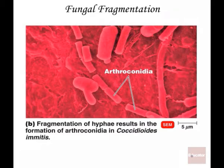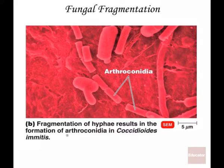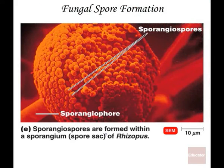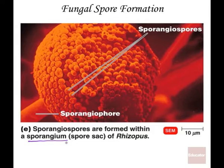Here is an example of fungal fragmentation. The hyphae has formed another one through fragmentation — it basically grows a hyphae and then breaks it off. Fungi can also grow through forming spores. These spores are basically immature hyphae or immature fungi that can grow up and become adults. This allows a fungus to reproduce itself by spreading spores, resulting in multiple fungi.